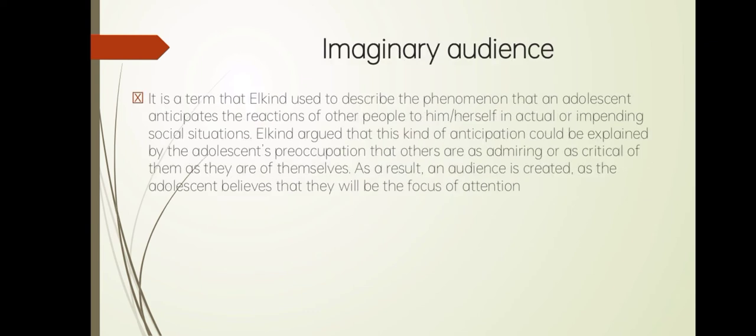Next is imaginary audience — a term Elkind used to describe the phenomenon where an adolescent anticipates the reactions of other people to him or herself in an impending social situation. Elkind argued that this anticipation could be explained by the adolescent's preoccupation that others are as admiring or as critical of them as they are of themselves. As a result, the adolescent believes they will be the focus of attention.